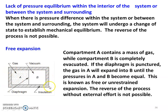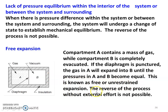Free expansion: in an insulated chamber, there are two chambers A and B. Chamber A is completely filled with gas, separated by a diaphragm, and B is completely vacuum. When the diaphragm is punctured, the gas expands and completely occupies the entire volume of A and B. This kind of expansion is called free expansion or unrestrained expansion. There is no work transfer and no heat transfer because it is insulated, and the reverse of the process naturally without any external effort is not at all possible. So free expansion is an irreversible process.